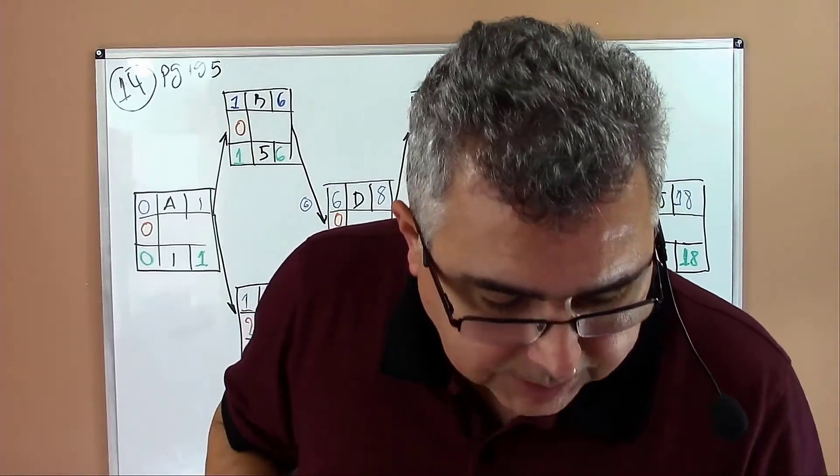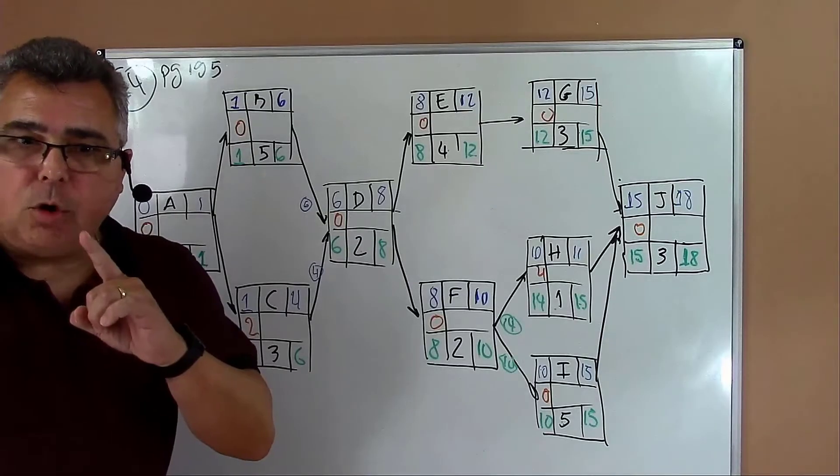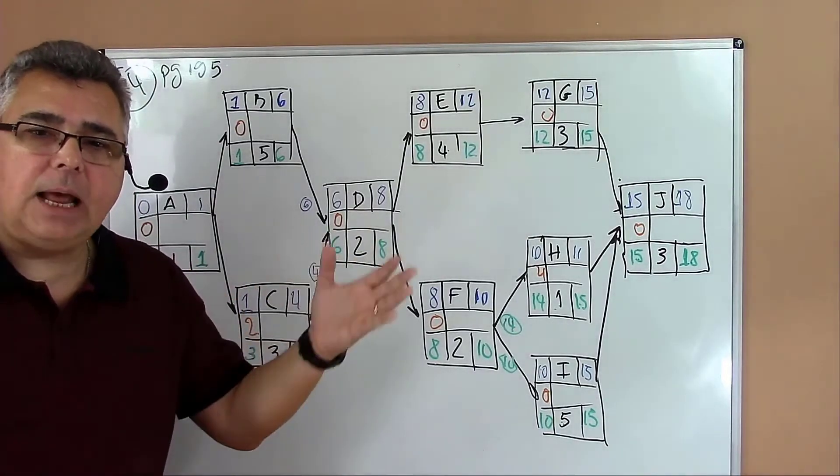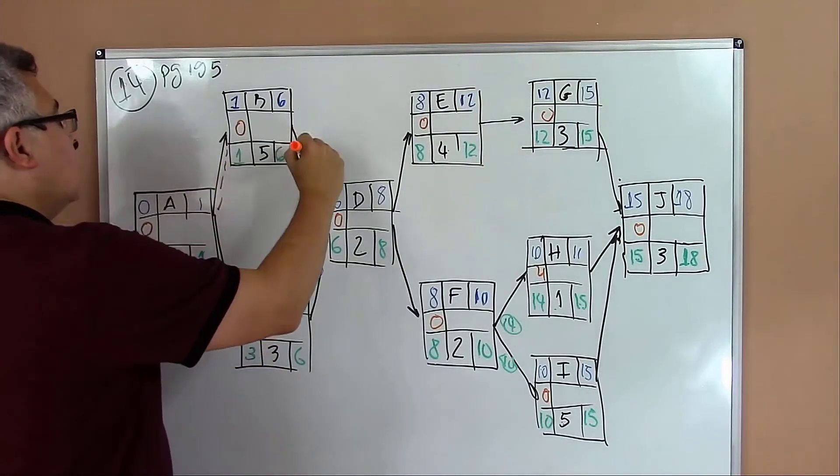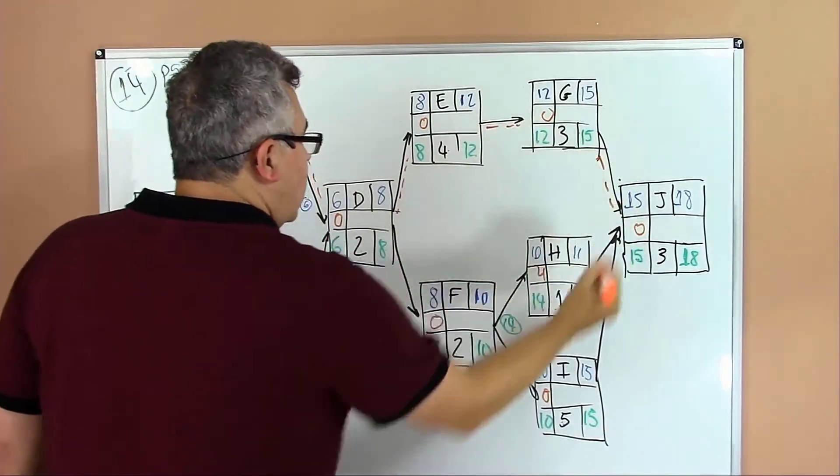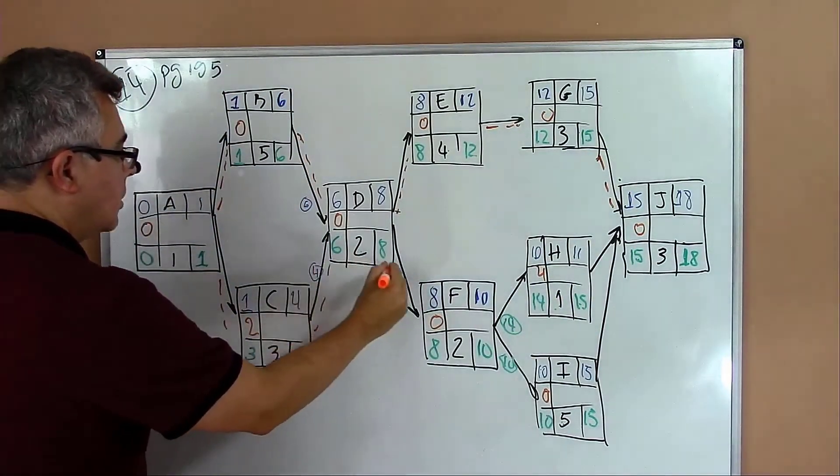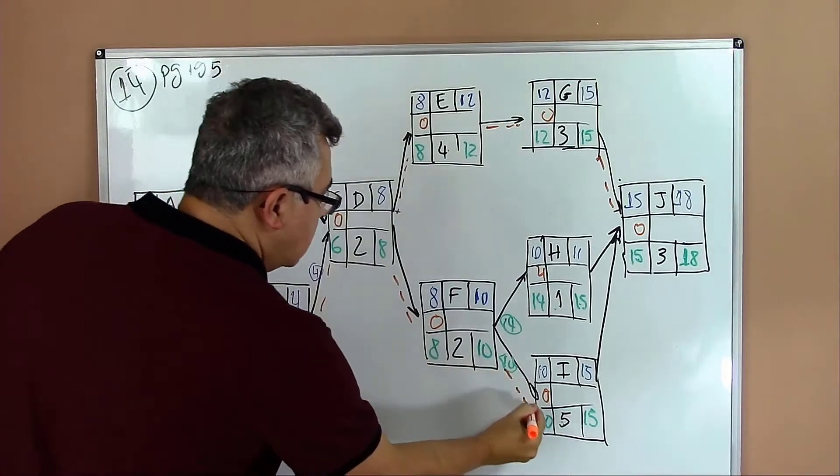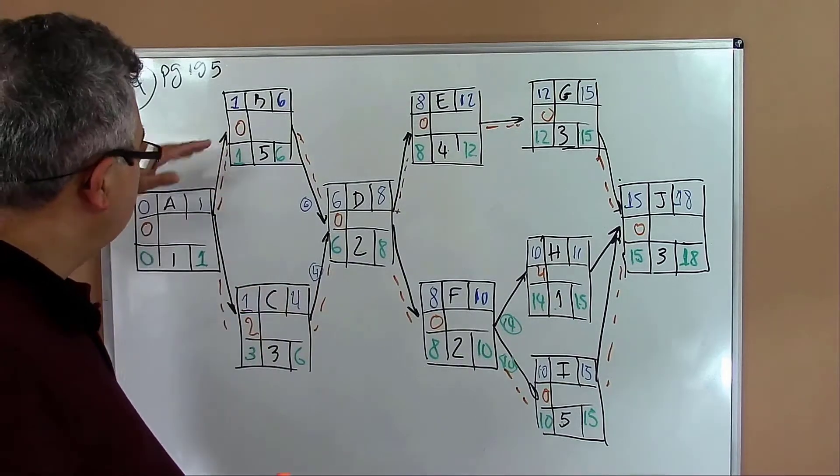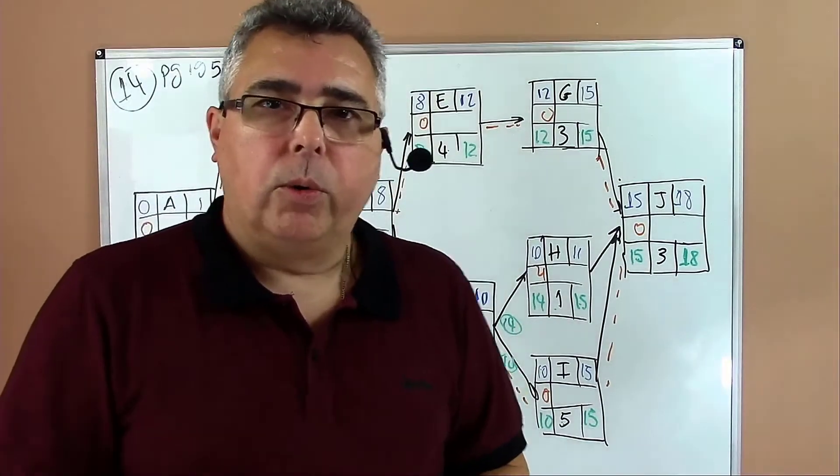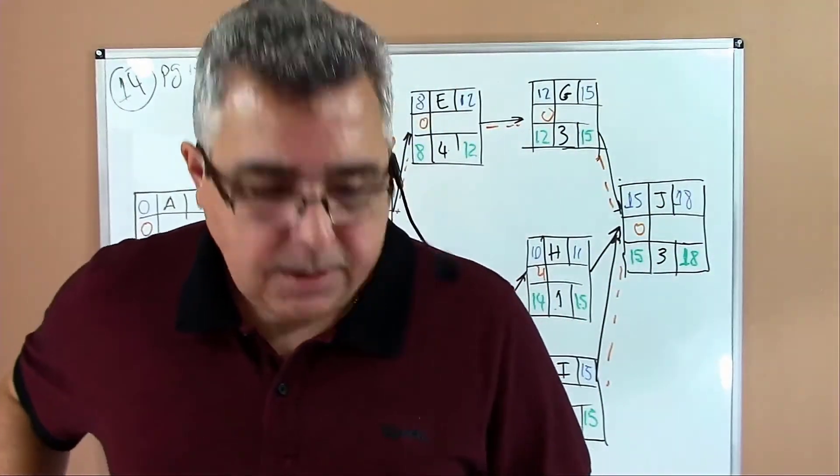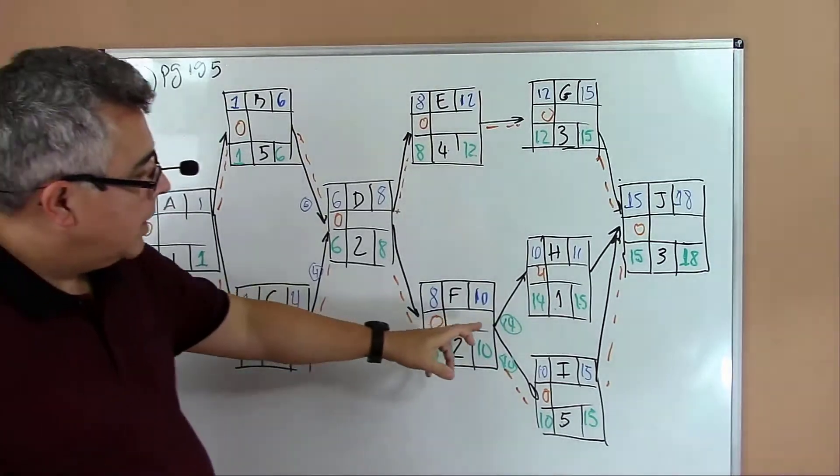There is another part of the question that asks us to identify the critical path. The critical path is the path in which the activities don't have any slack. Here we have one path with no slack, but as well we have another critical path. You have two critical paths actually. It can be more than one because you can go here and combine. You have multiple critical paths in exercise 14.